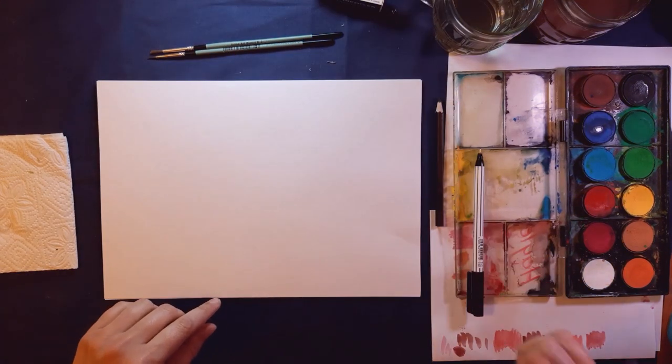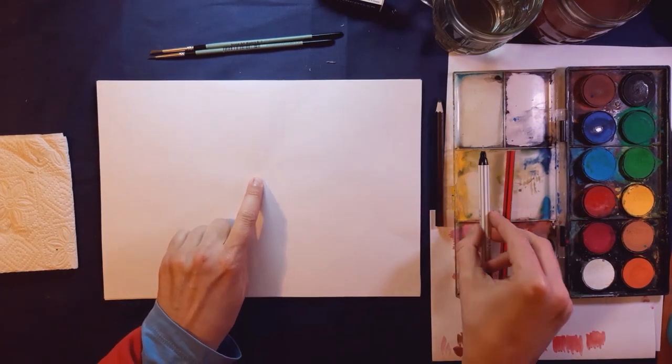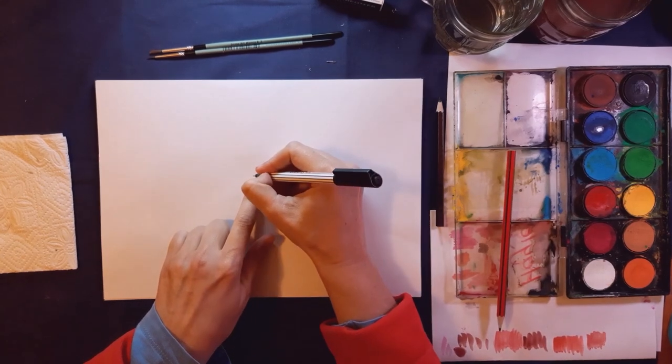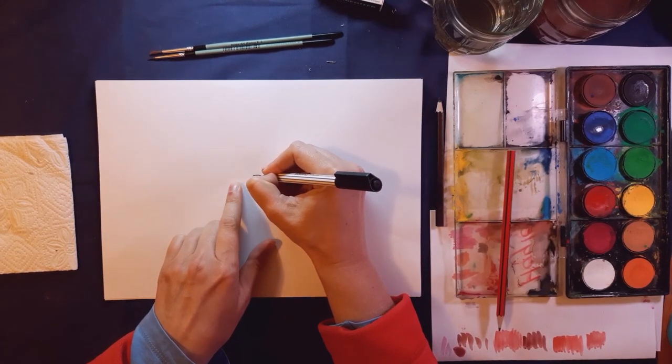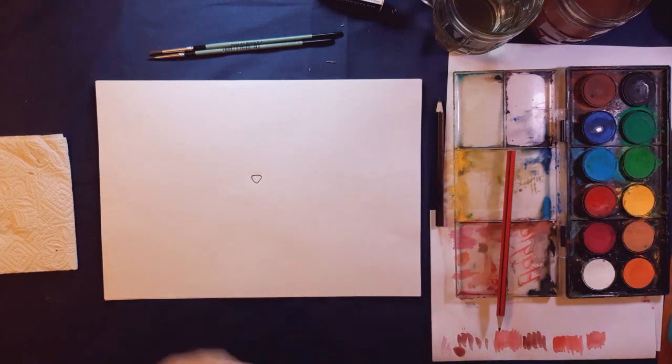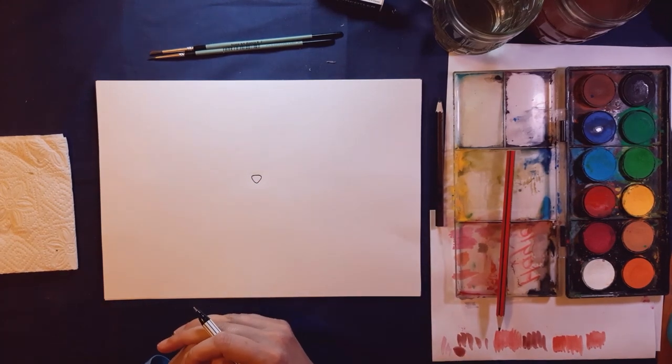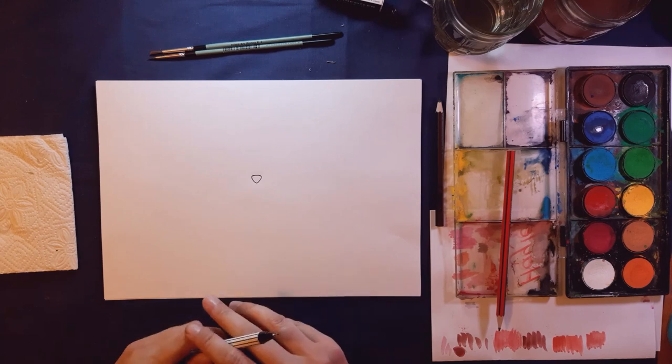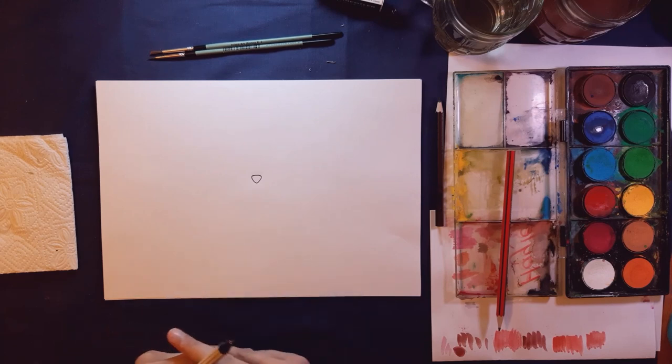To start off, we're going to start in the middle and draw a little upside-down triangle that's got rounded corners, a little circle, kind of like a cat's nose. I'm drawing in pens so you can see clearly on the video, but you can draw with pencil and easily erase any mistakes.